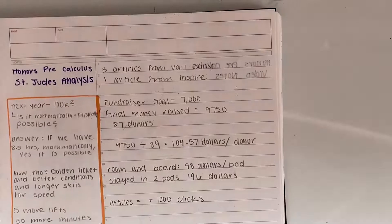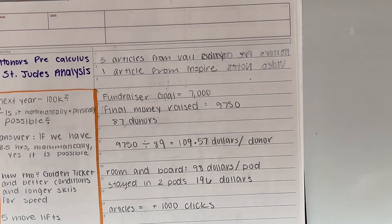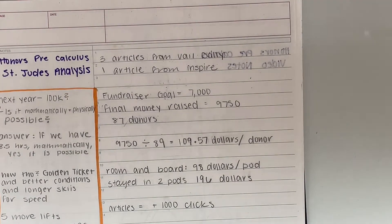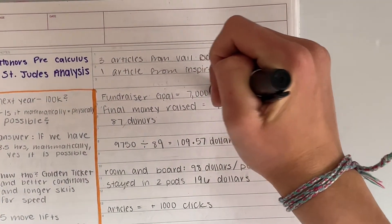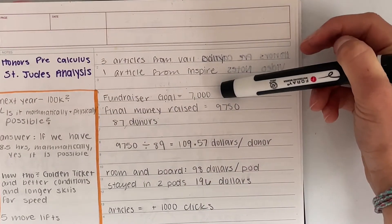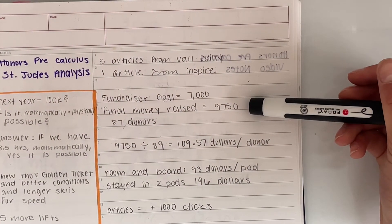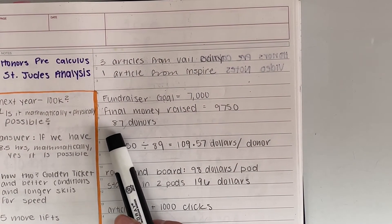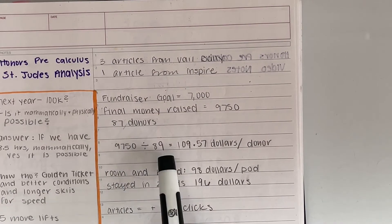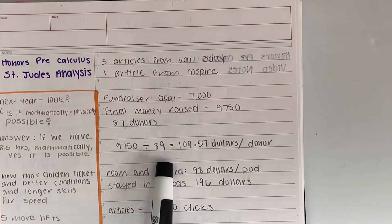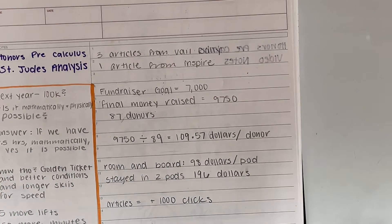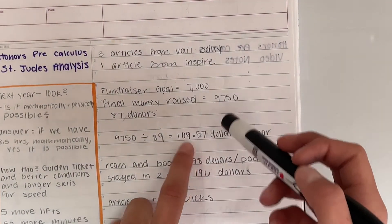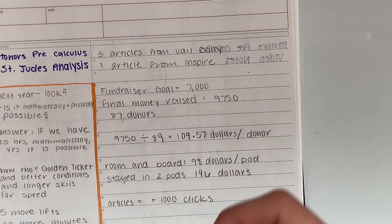So next is for the fundraiser part, because there's math involved in the fundraiser too. Okay. So for the fundraiser, our goal was $7,000. Our final money raised was $9,750. And there's 70, or this is a mistake on my part. There was actually 89 donors. So to find the average amount each donor made, you divide the total by the number of donors and get everyone on average donated $109.57 per donor.